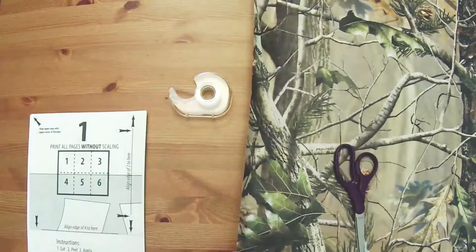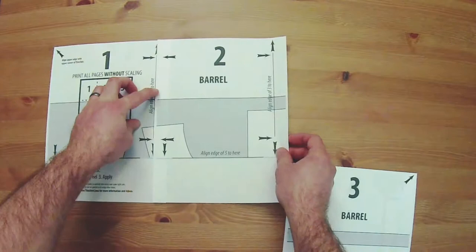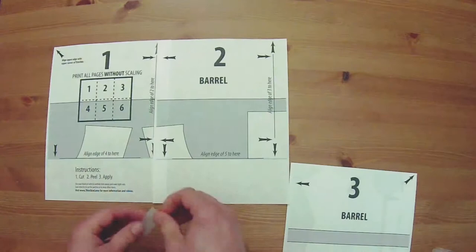Set the scissors and the thin skin aside. Carefully arrange the six pages of the template, ensuring the arrows are properly aligned. Begin taping the template together using at least two pieces of tape per sheet.